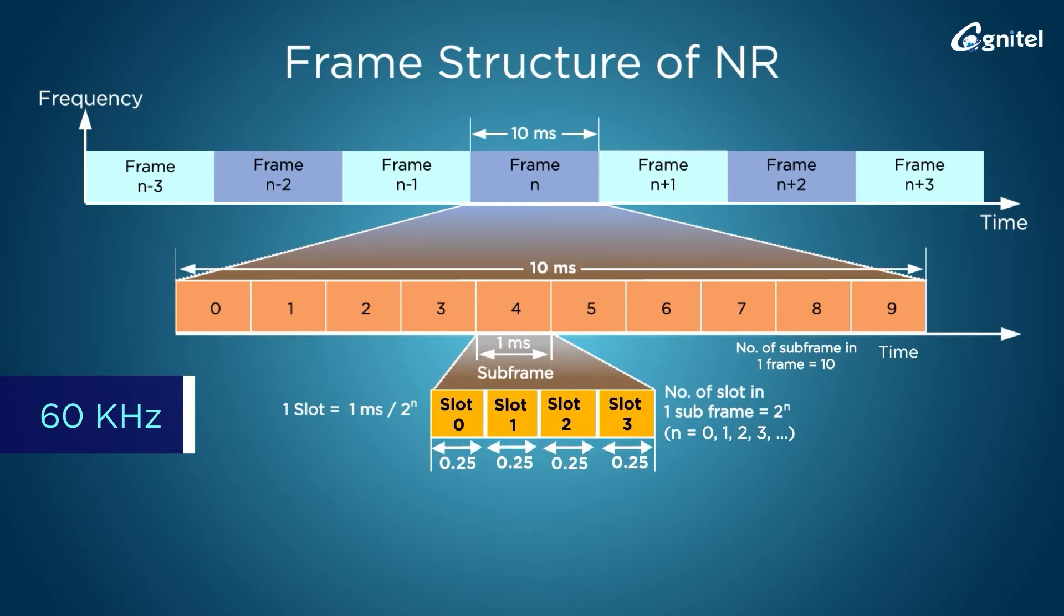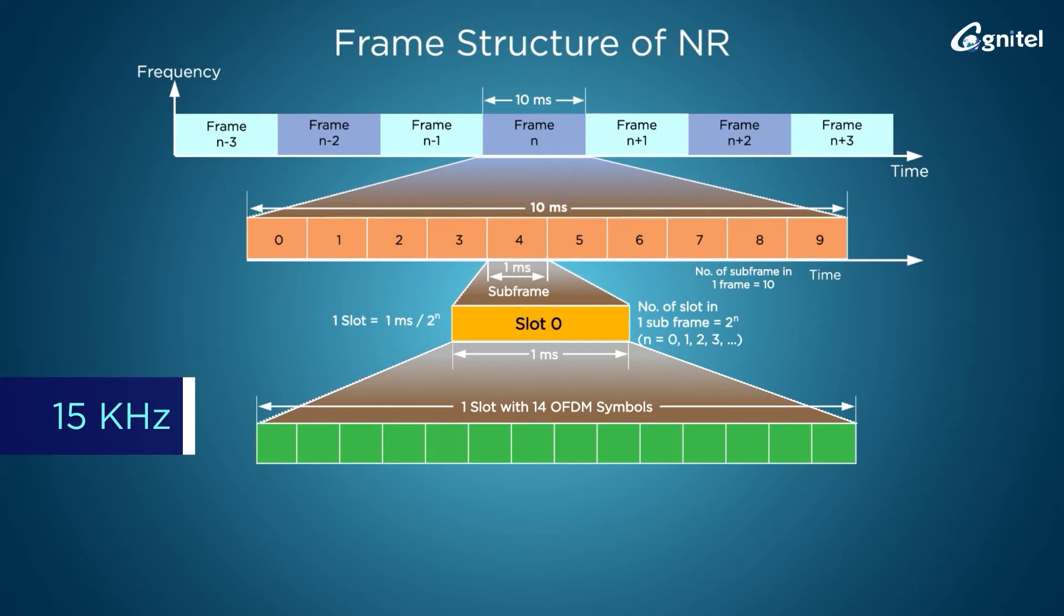For 60 kilohertz subcarrier spacing, slot duration becomes 0.25 milliseconds and four slots fit into one subframe. The same concept applies to 120 and 240 kilohertz subcarrier spacings.